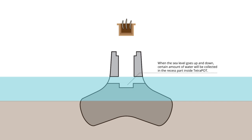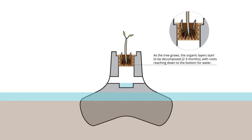When the sea level goes up and down, certain amount of water will be collected in the recessed part inside the pot. As the tree grows,